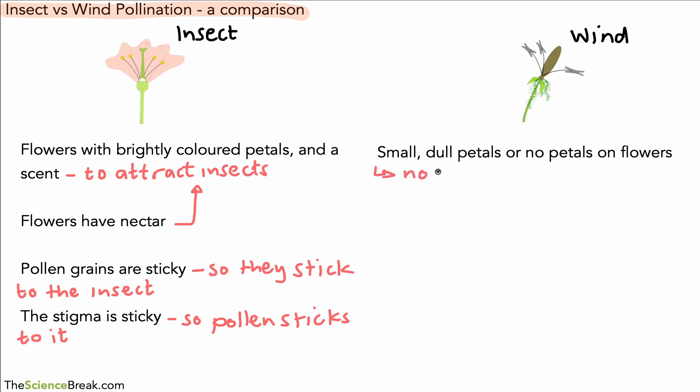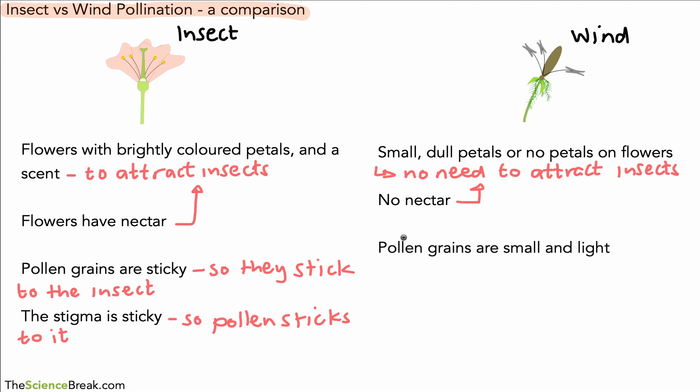Because there's no need to attract any insects—they're not using insects for pollination—so we don't need brightly colored flowers or brightly colored petals on flowers. No nectar is produced because again we're not attracting any insects, so we don't need to have any nectar.